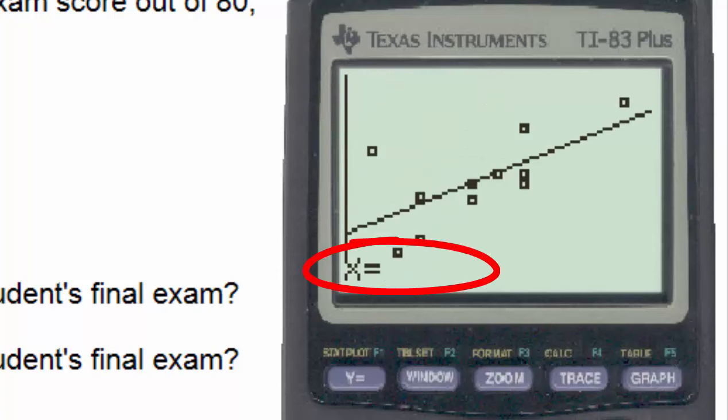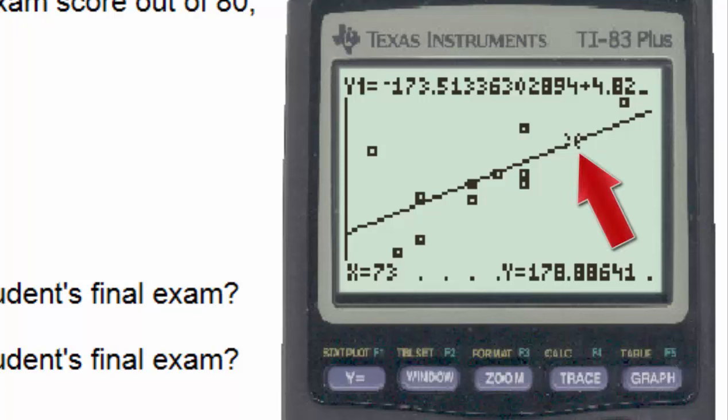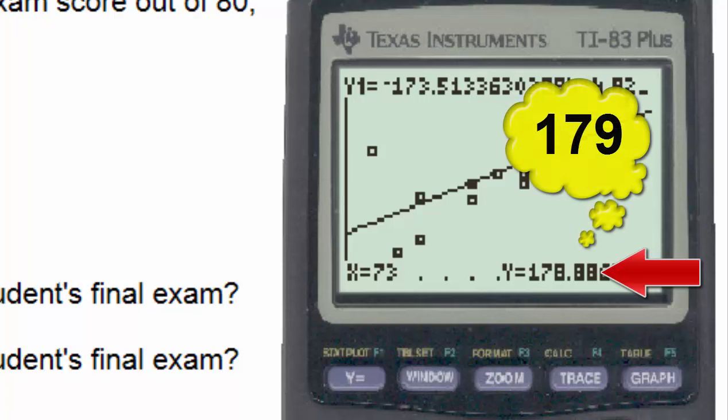And the x value, which corresponds to the score on the third exam for this problem, is the number 73. And when we hit enter, we see a point on the regression line, which has an x value of 73, and a predicted y value of 178.88, which since this is a score on the exam, probably ought to be given as 179.